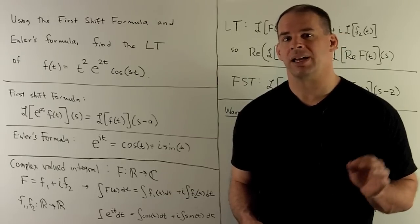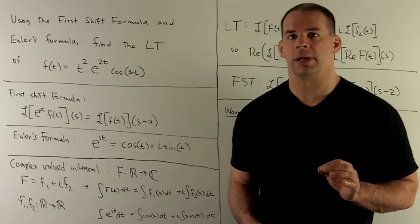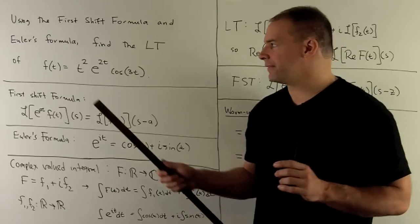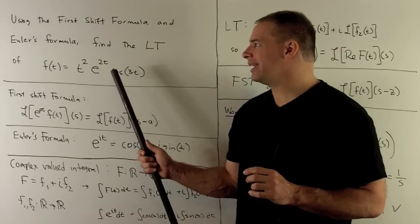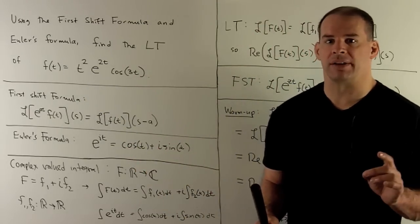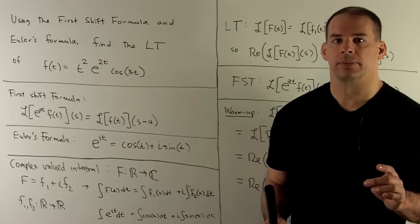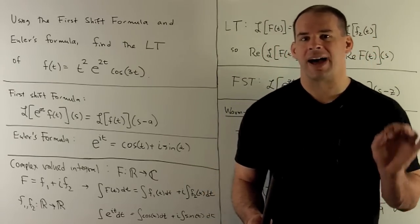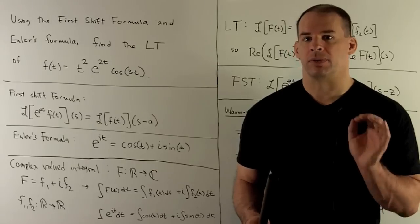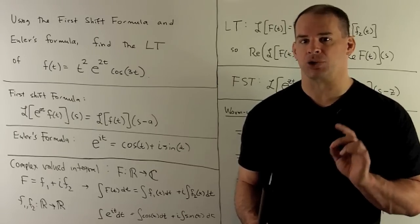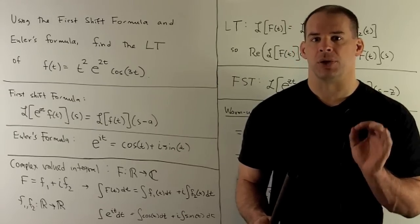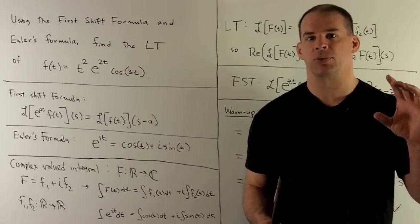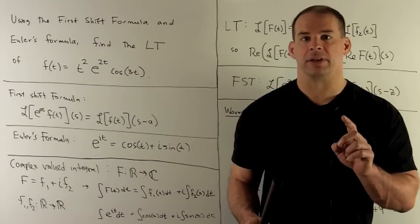Using the first shift formula and Euler's formula, find the Laplace transform of the function f(t) = t² e^(2t) cos(3t). The motivation behind this problem is to find a master recipe for the Laplace transform of our elementary functions — taking a good clip off our list of Laplace transforms and getting them under one method.